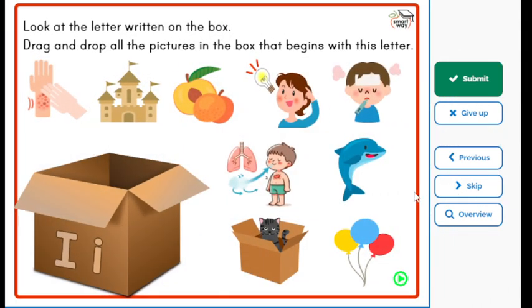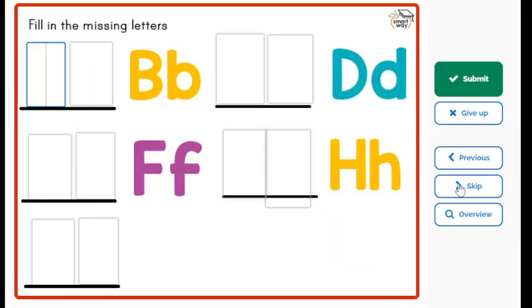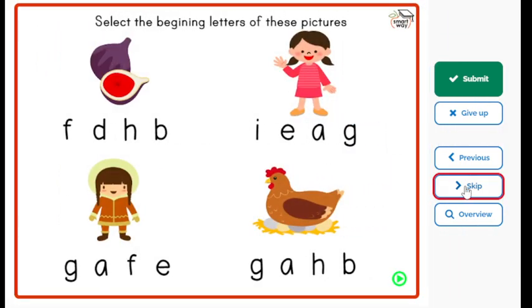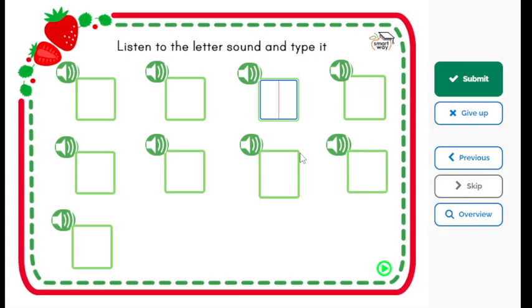Look at the letter written on the box. Fill in the missing letters. Select the beginning letter. Listen to the letter sound and type it. G. F. A. A.